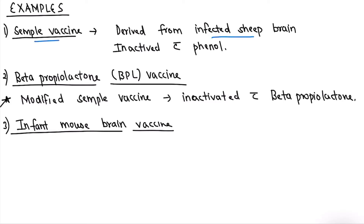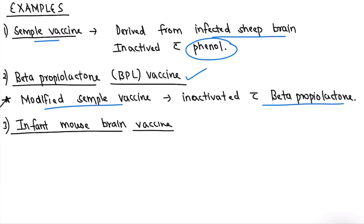Examples of neural vaccines: the first is the Semple vaccine, derived from infected sheep brain and inactivated with phenol. The second is the Beta-Propiolactone (BPL) vaccine, which is a modified version of the Semple vaccine — the only difference is it is inactivated with beta-propiolactone instead of phenol. The third is the Infant Mouse Brain vaccine.